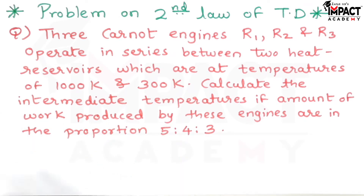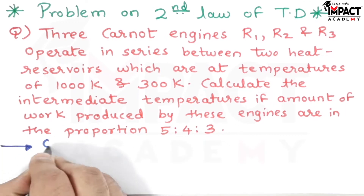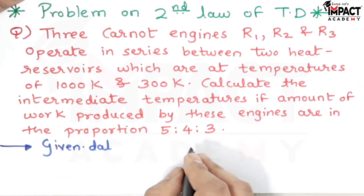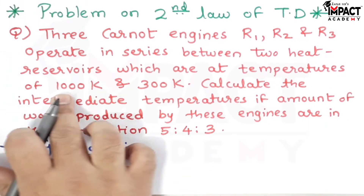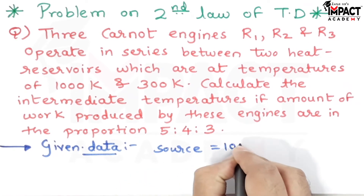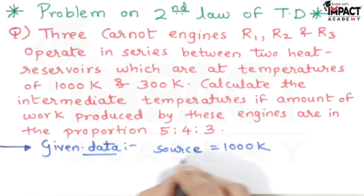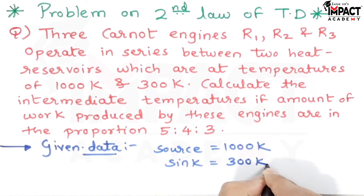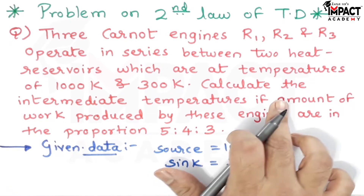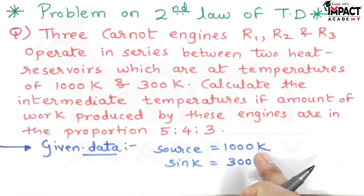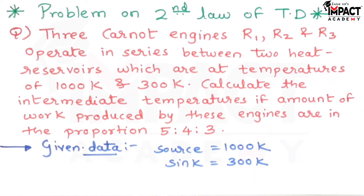Writing the given data: the source temperature is 1000 Kelvin (the higher temperature) and the sink temperature is 300 Kelvin (the lower temperature). We are asked to calculate the intermediate temperatures, which are the unknown temperatures between these two limits.